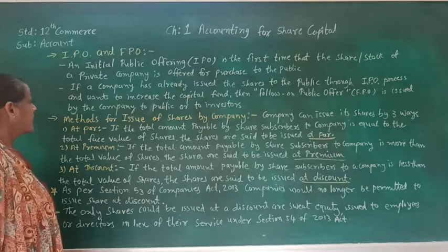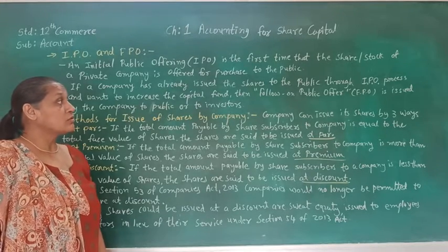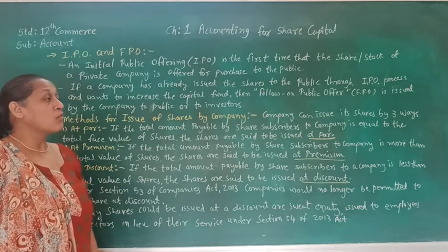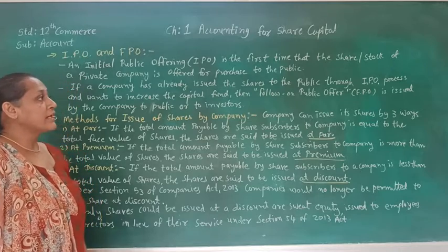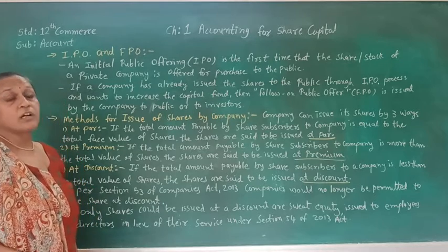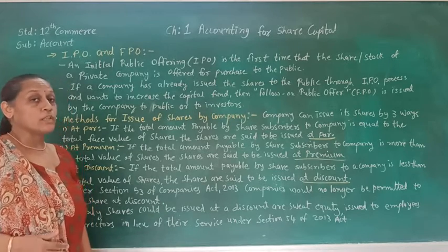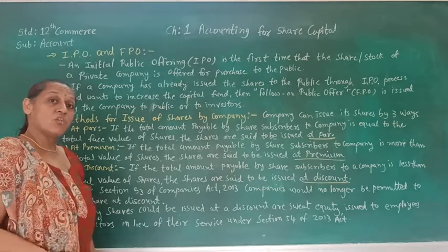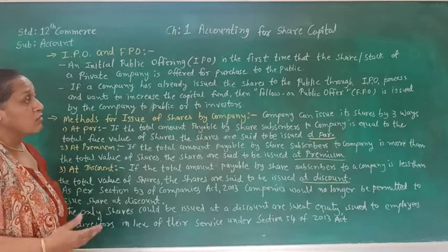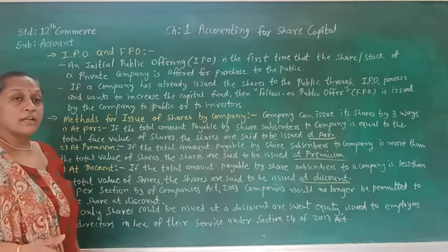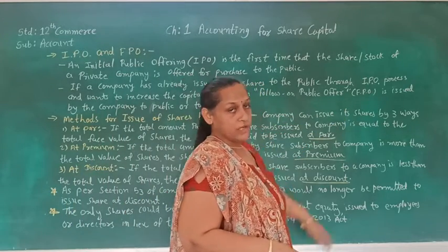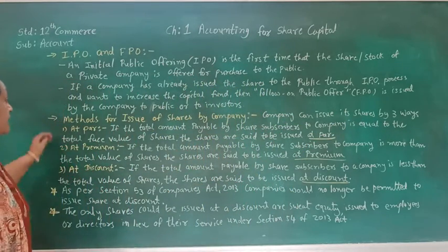Now let's see FPO. If a company has already issued shares to the public through the IPO process and wants to increase the capital fund, then a Follow-up Public Offering is issued by the company to the public or to investors. So if a company has already made its Initial Public Offering and wants to increase capital through another public offering, that follow-up public offering is called FPO. The full form of FPO is Follow-up Public Offer.